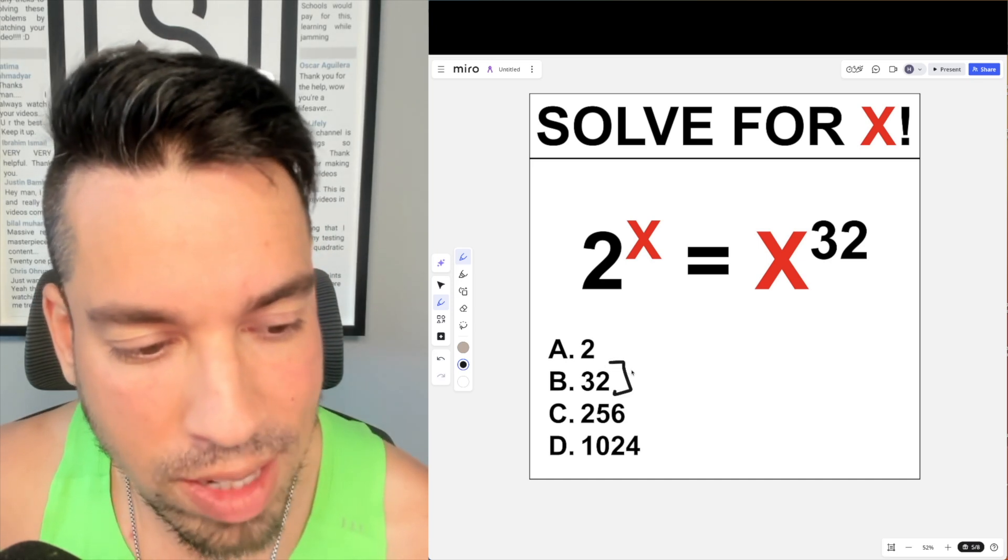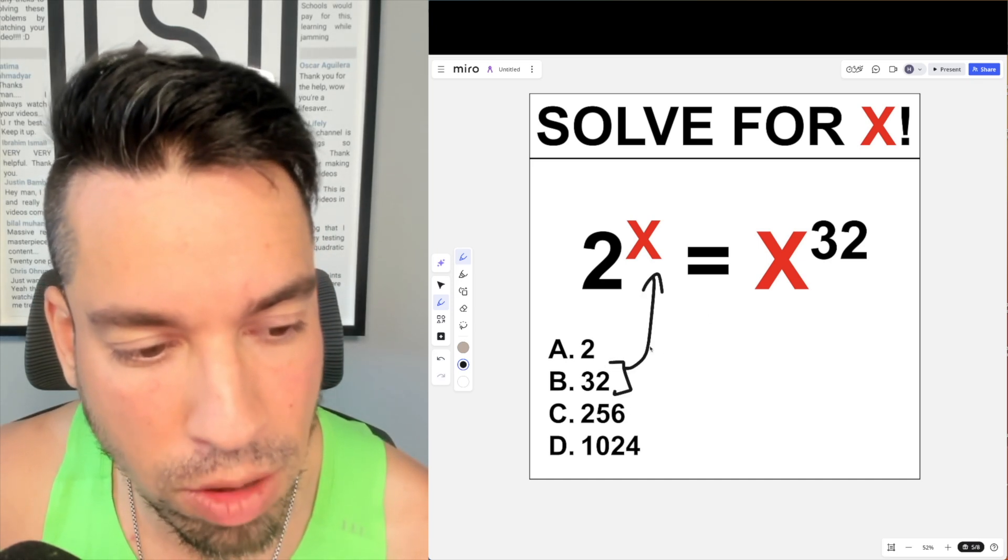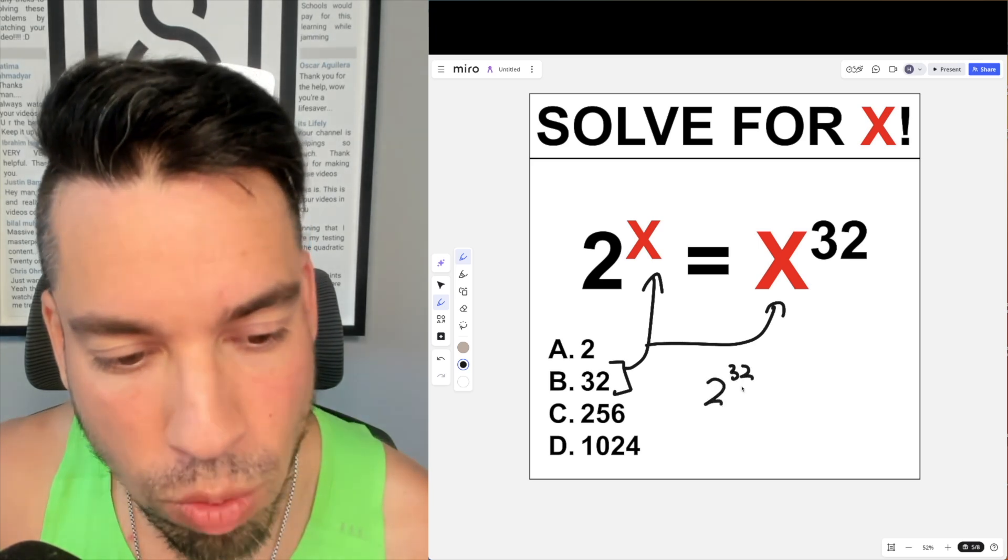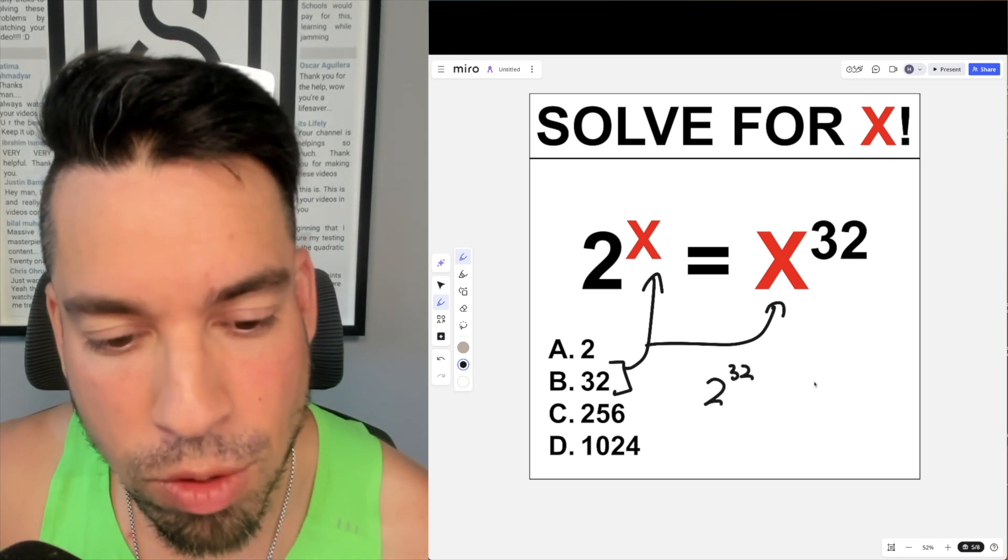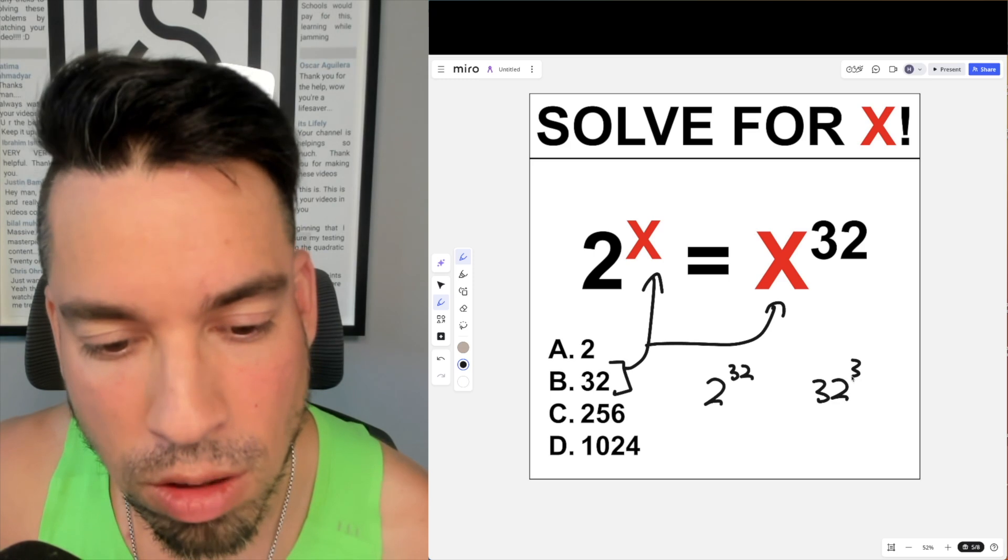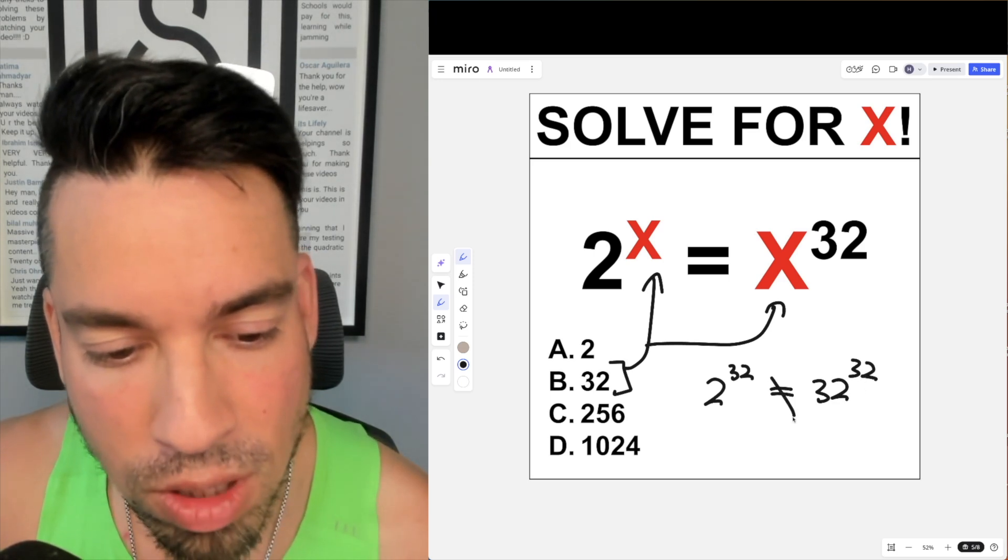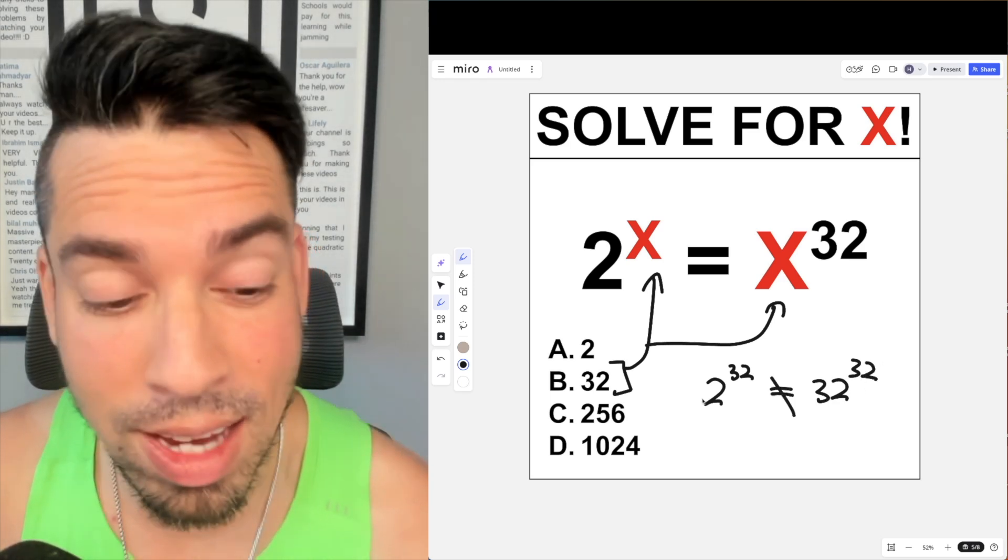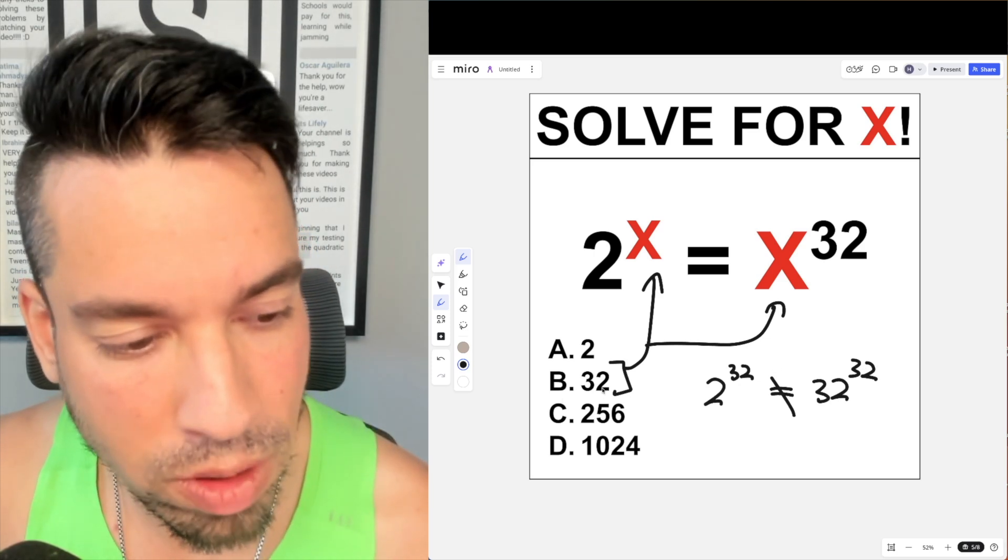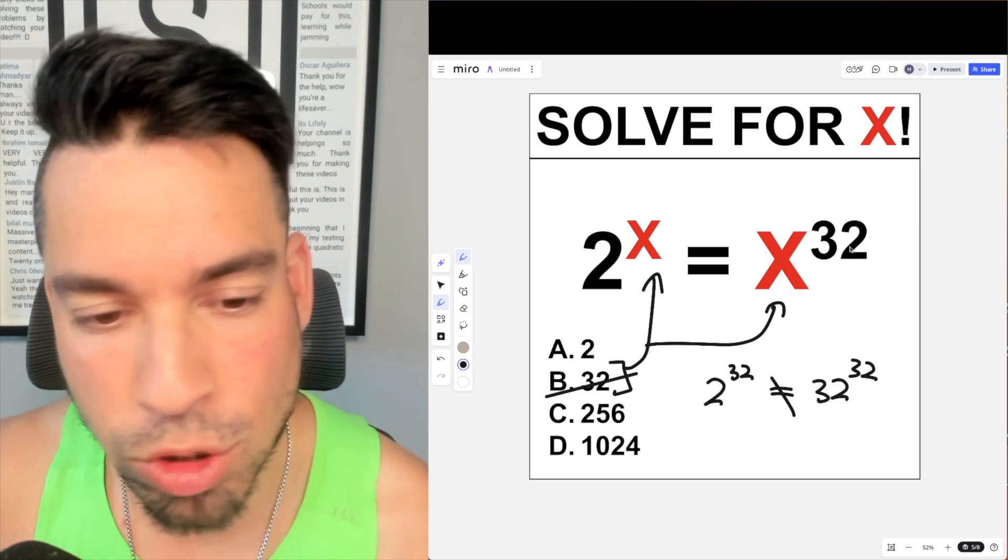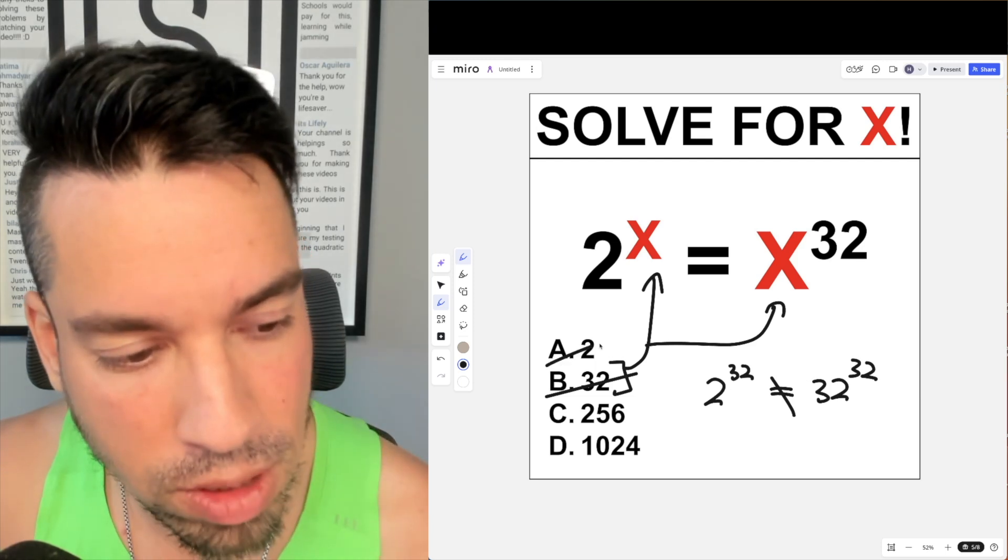We're going to start with 32 as the potential solution. I'm going to plug 32 in there and there. Now, 2 to the 32 we're going to write that out like that. Right over here we have 32 to the 32nd power. Now I can tell right off the bat these two guys are not equal to each other. 32 to the 32nd can't be 2 to the 32nd, so this is going to be out. 2 of course doesn't work either because you have 2 squared equals 2 to the 32nd. Those are obviously out as well. So it's down to one of these two.